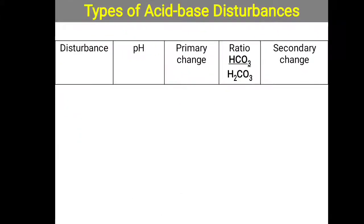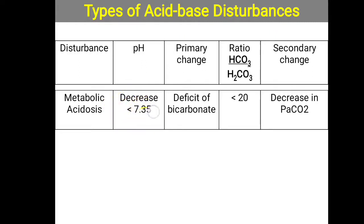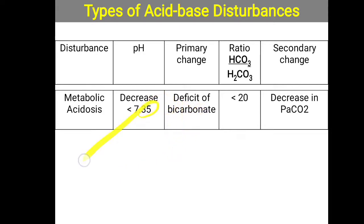In metabolic acidosis, pH is decreased and bicarbonate is decreased — both moving in the same direction. The trick: when pH and the primary parameter change in the same direction, it is metabolic. 'Same' starts with 'S', and 'ME' in same stands for metabolic. So both pH and bicarbonate lowering together indicates metabolic acidosis. This rule applies to metabolic alkalosis as well.